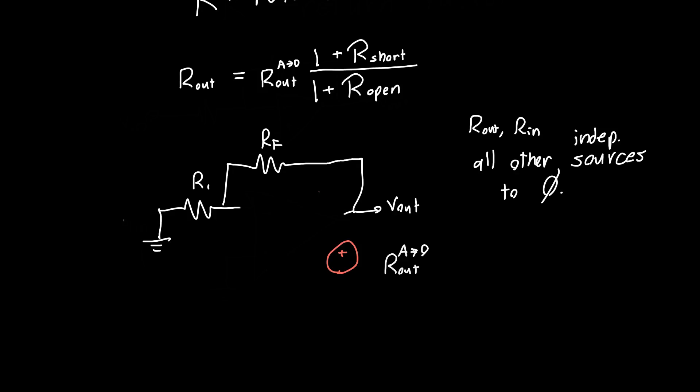Now what's the output resistance of this system? So let's apply a voltage V test and measure the current flowing out of it, I test. Well, this is trivial. If we just erase, let's make this a little prettier. The only thing in our path is two series resistors. So the output resistance with the gain set to zero is just RF plus R1. Well, that was great. And if we had known what we're doing ahead of time, we could have just looked at the circuit and said, yep, it's that.